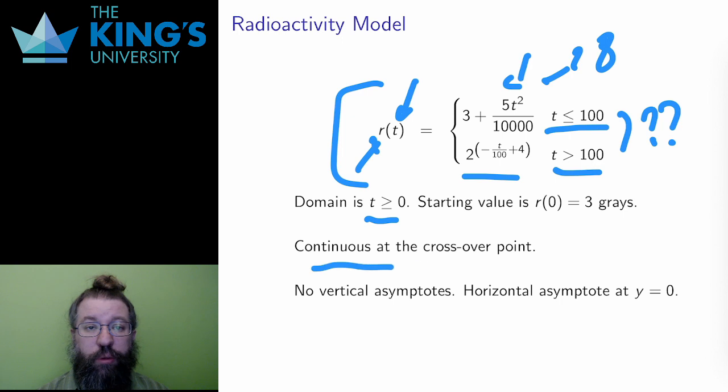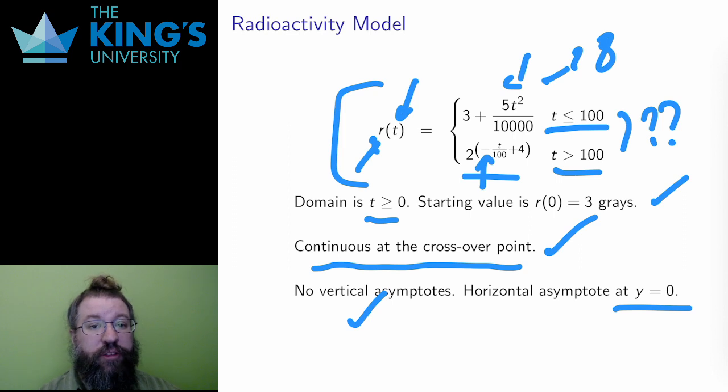The starting value is 3 by evaluating R of 0. There are no vertical asymptotes. The long-term behavior is decay to 0 since the exponent in the second part of the function is negative. That means there is a horizontal asymptote at y equals 0, and it also means that the long-term behavior is that the radioactivity will decay away and eventually become very close to 0.